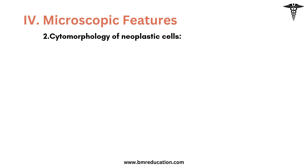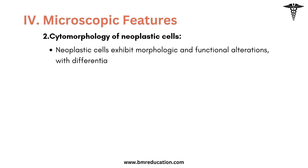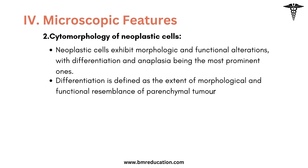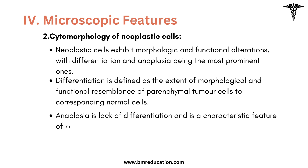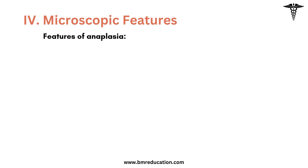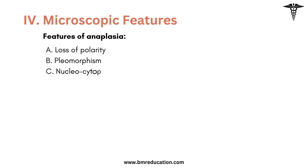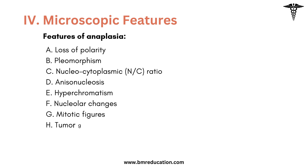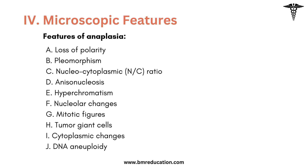Let's look into the cytomorphology of neoplastic cells. The neoplastic cell is characterized by morphologic and functional alterations, the most significant of which are differentiation and anaplasia. Differentiation is defined as the extent of morphological and functional resemblance of parenchymal tumor cells to corresponding normal cells. Anaplasia is defined as lack of differentiation and is a characteristic feature of most malignant tumors. There are mainly 10 features that define malignant tumors from benign tumors: loss of polarity, pleomorphism, nucleus-to-cytoplasmic ratio, anisonucleosis, hyperchromatism, nucleolar changes, mitotic figures, tumor giant cells, cytoplasmic changes, and DNA aneuploidy.